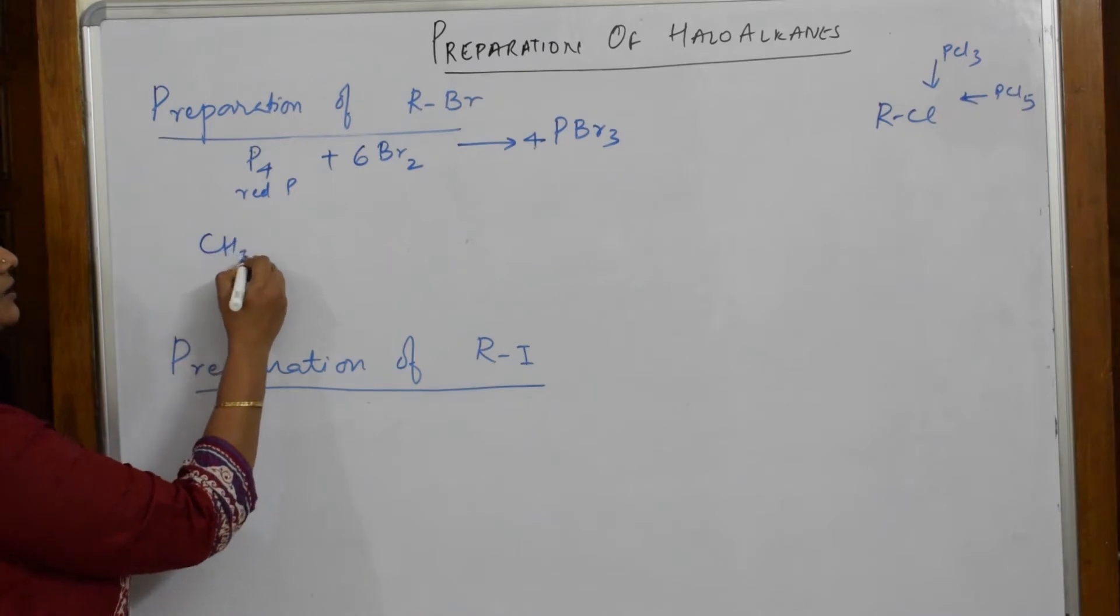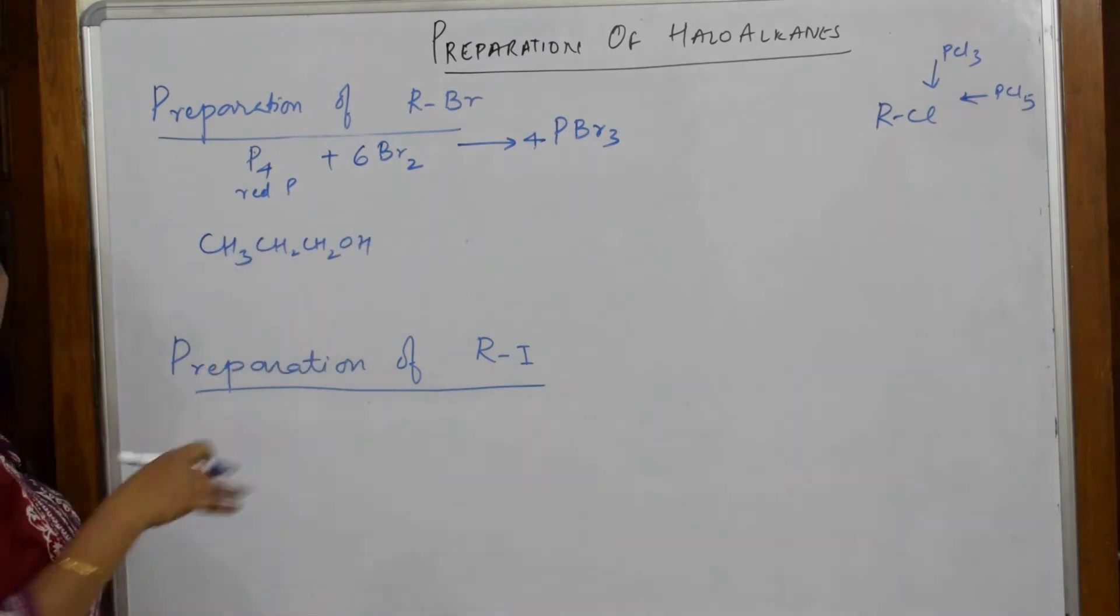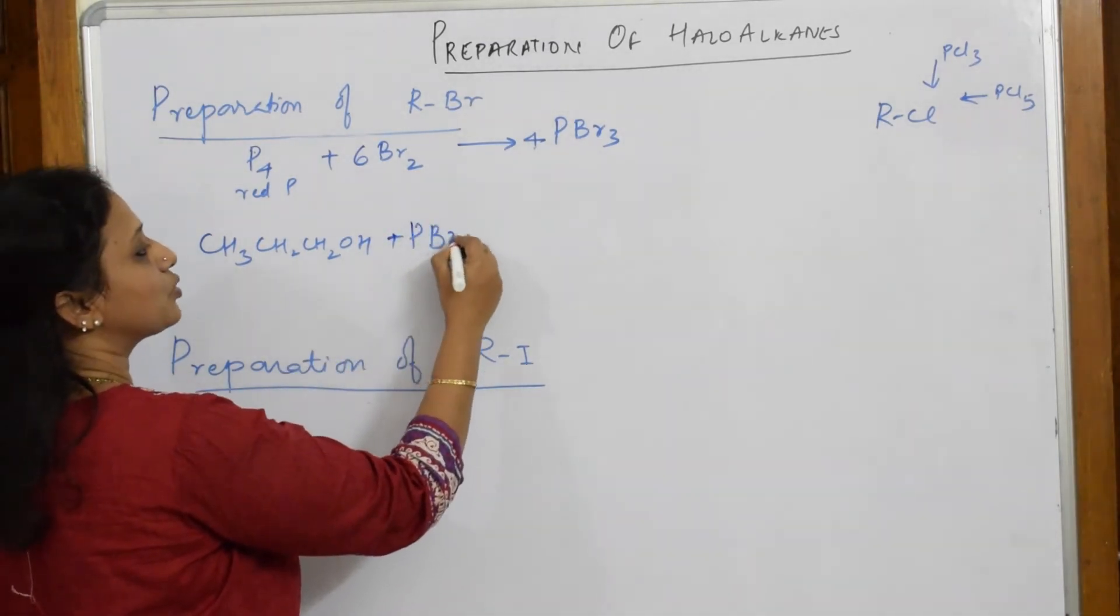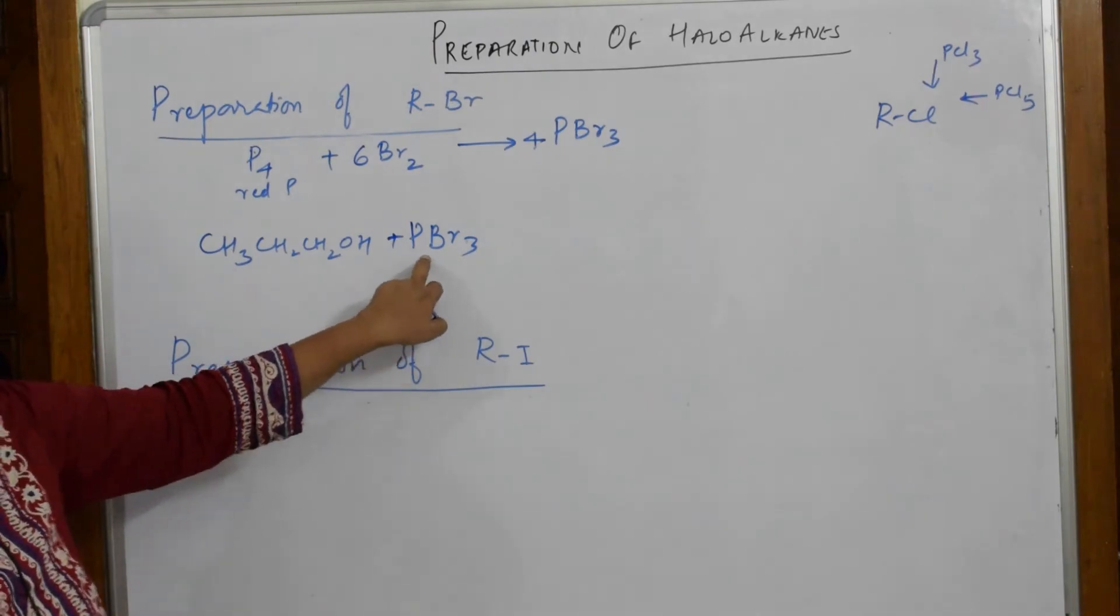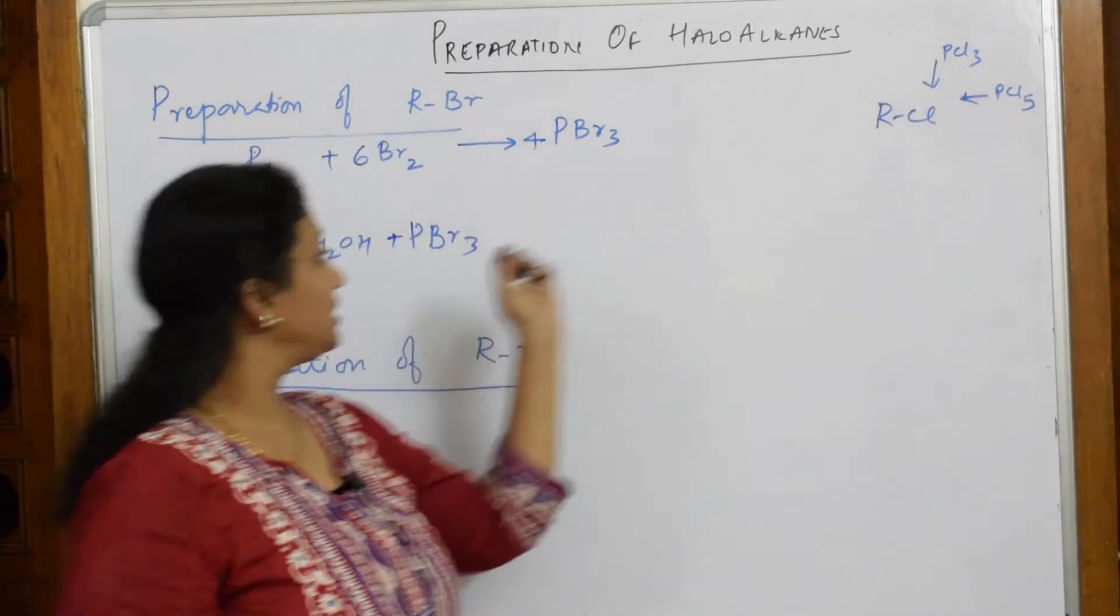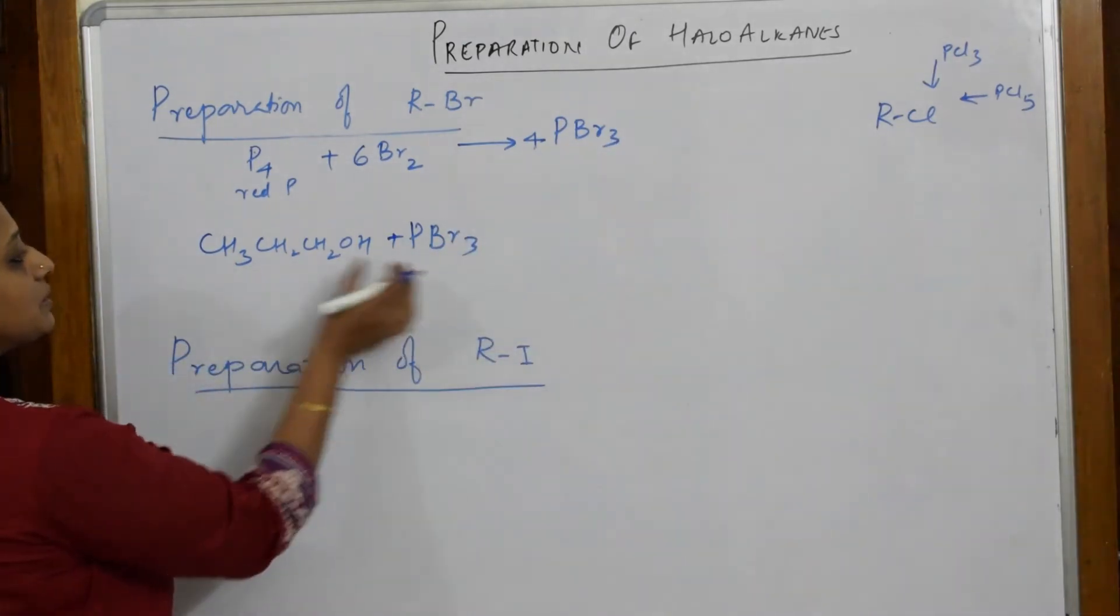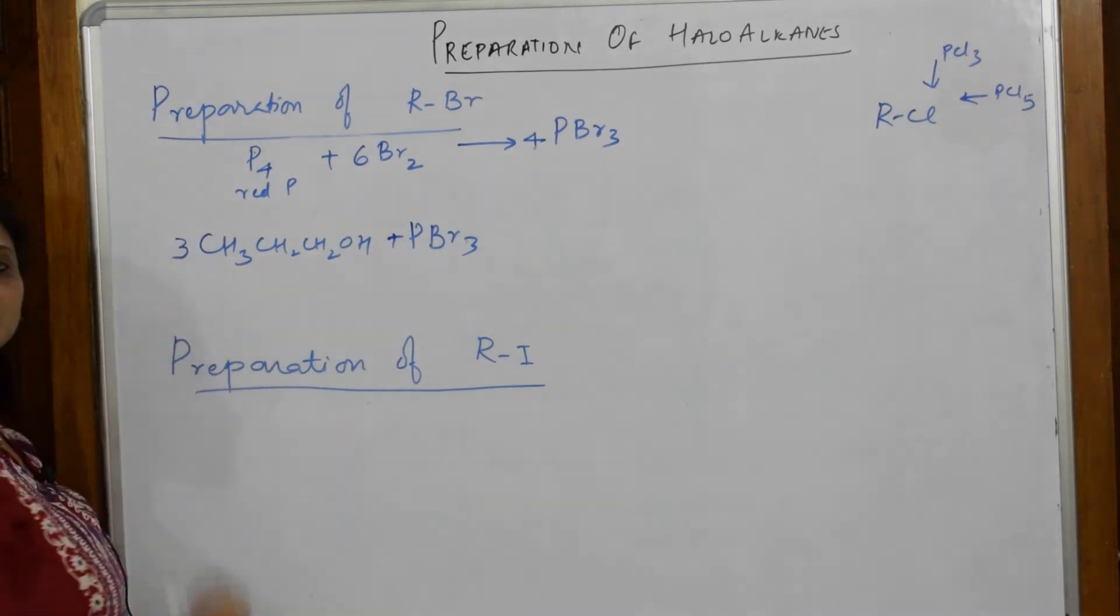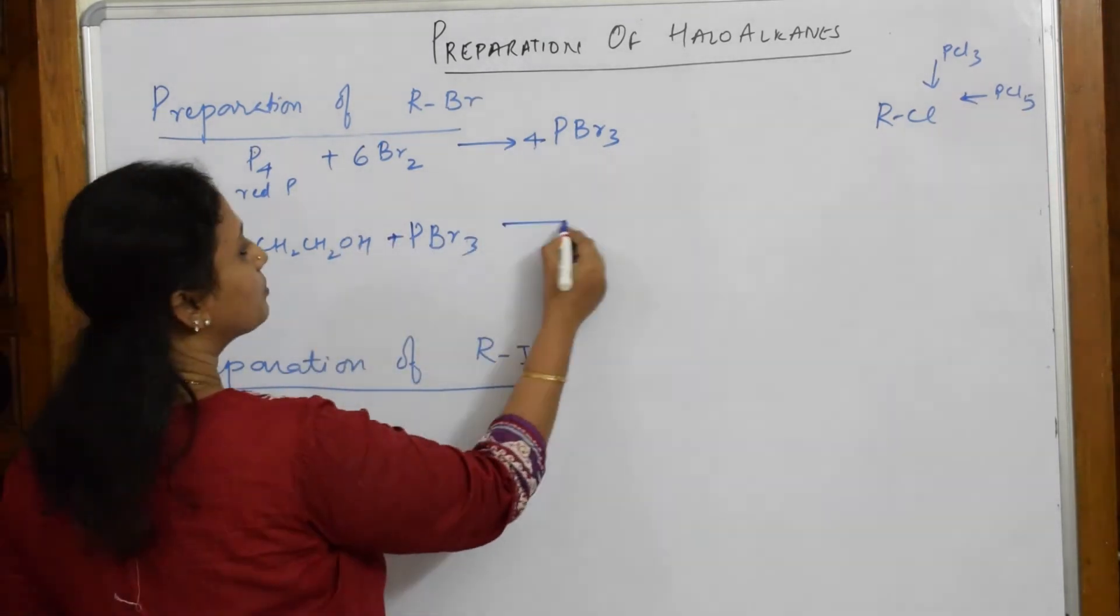Now I am going to take the alcohol CH3CH2OH. Any alcohol, secondary also will do. Now we are going to pick up this phosphorus tribromide PBR3. Now isn't it looking like PCL3? It is the same. Here it is PBR3, there it is PCL3. So just remember there are 3 bromines so this alcohol also should be 3. 3 bromines replaced with 3 alcohols.